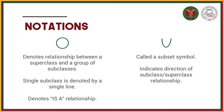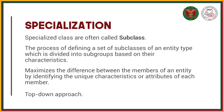We also have the U symbol, which is the subset symbol. The direction the curve of the U points indicates who the subclass is. Specialization means you have a general class and then you specialize it into subclasses.